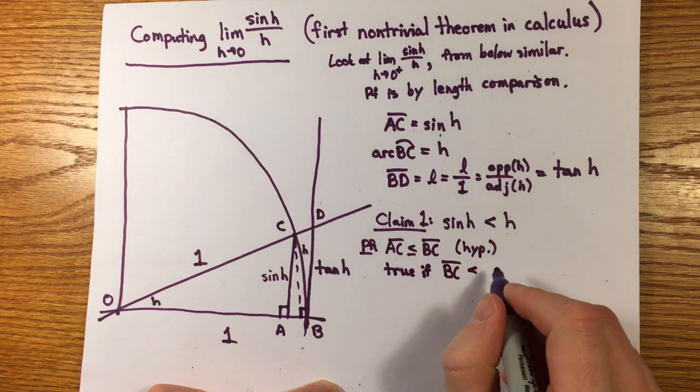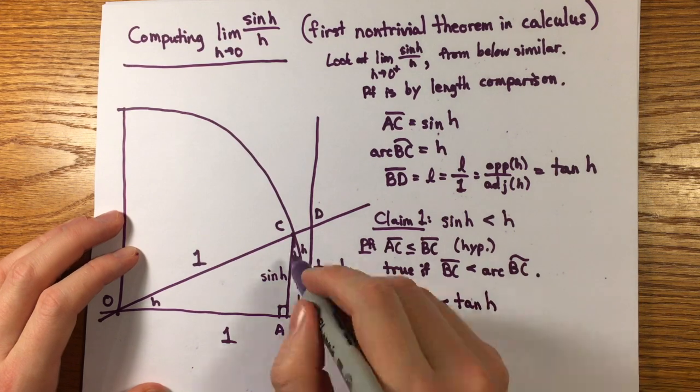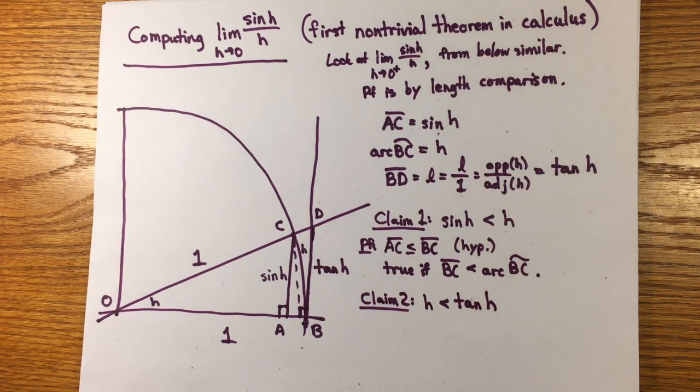This seems like it must be true since AC is shorter than the segment BC, so it's true as long as the straight line between B and C is shorter than the arc BC along the circle.